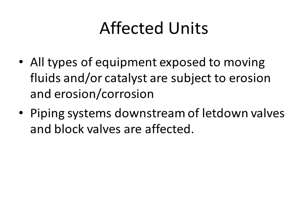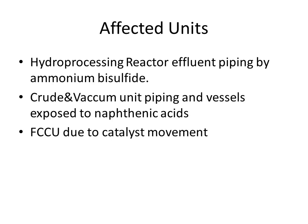Affected items include bends, elbows, reducers, piping, measuring devices, turbine blades, nozzles, and others. Erosion can also be caused by gas-borne catalyst particles or by particles carried by a liquid such as a slurry. Hydroprocessing reactor effluent piping is affected due to the presence of ammonium bisulfate, and crude and vacuum unit piping and vessels exposed to naphthenic acids are affected by erosion-corrosion.